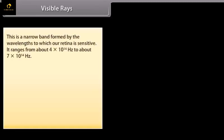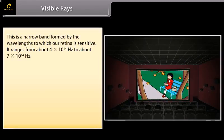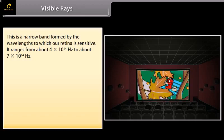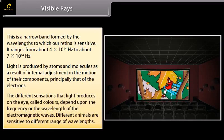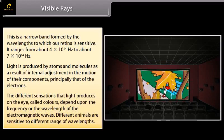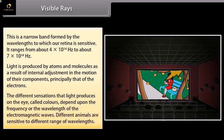Visible rays. This is a narrow band formed by the wavelengths to which our retina is sensitive. It ranges from about 4 times 10 raised to the power 14 Hz to about 7 times 10 raised to the power 14 Hz. Light is produced by atoms and molecules as a result of internal adjustments in the motion of their components, principally that of electrons. The different sensations that light produces on the eye depends upon the frequency or wavelength of the electromagnetic waves. Different animals are sensitive to different range of wavelengths.